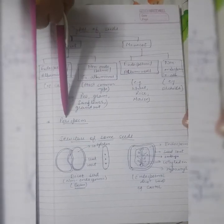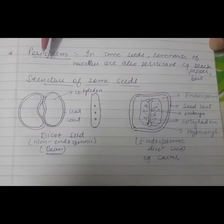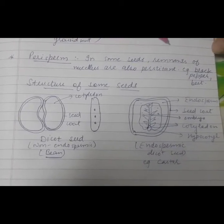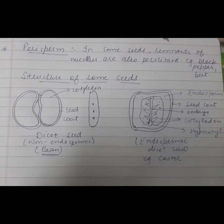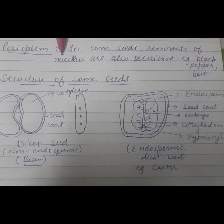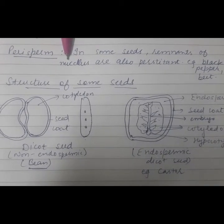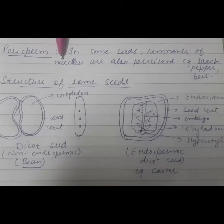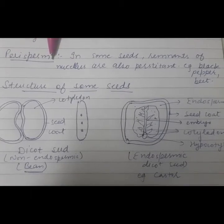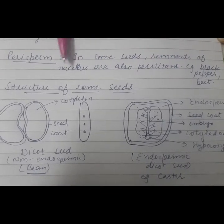One more term is perisperm. This term is given for seeds in which remnants of the nucellus are also persistent. The nucellus is a tissue that was present in the embryo sac before endosperm development; after fertilization it normally converts completely into endosperm. But in some seeds the nucellus is also found remaining, and for that the term perisperm is given. Examples of such seeds are black pepper and beet.